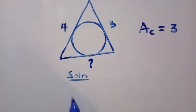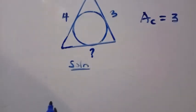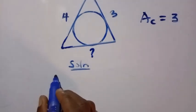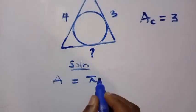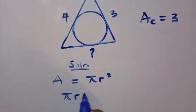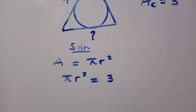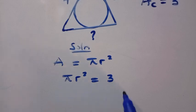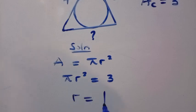For the solution, we know that the area of a circle is given as π times radius squared. The area has been given as three, so we have πr² = 3. To find the radius, we divide both sides by π and take the square root, giving us r = √(3/π). This is the first thing to take note of.